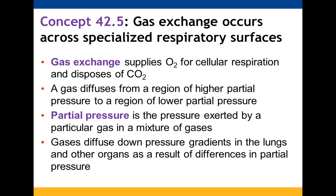Gases diffuse, just like we talked about water with osmosis. In terms of gases, they're going to diffuse from regions of higher partial pressure to regions of lower partial pressure. Partial pressure is the pressure exerted by a gas present in a mixture of gases. So gases are going to diffuse down gradients — down pressure gradients in the lungs as well as other organs due to these differences in partial pressure. If the air you are inhaling has more oxygen in it than where the air is going to, then the oxygen would move into those particular cells.